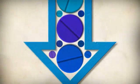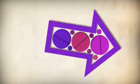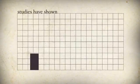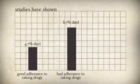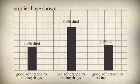Placebos that are blue work best as downers. And placebos that are red are better as uppers. Studies have shown that people who take their meds on a regular basis are less likely to die than those that don't. Even if those meds are all placebos.